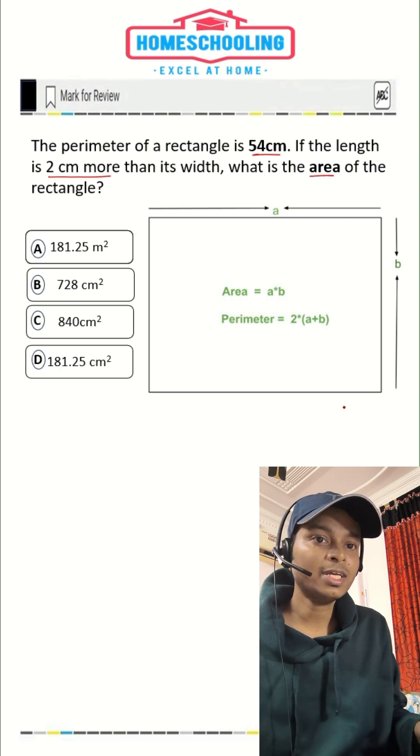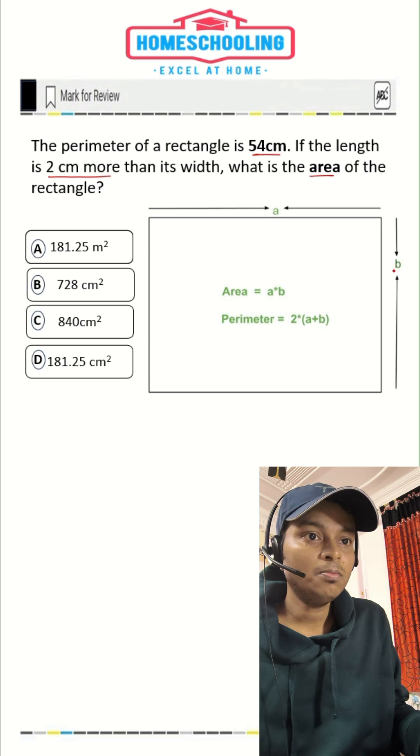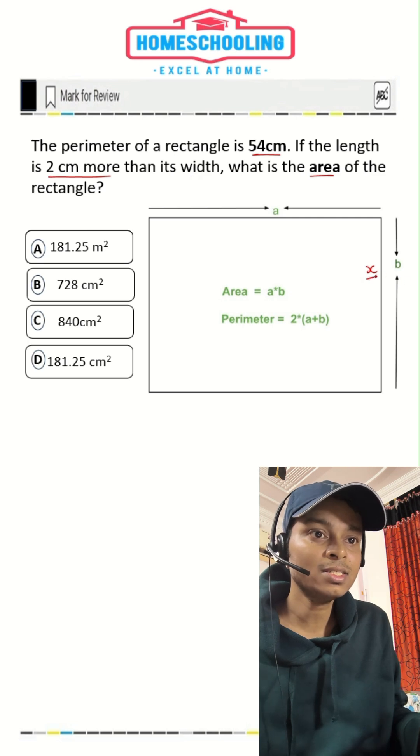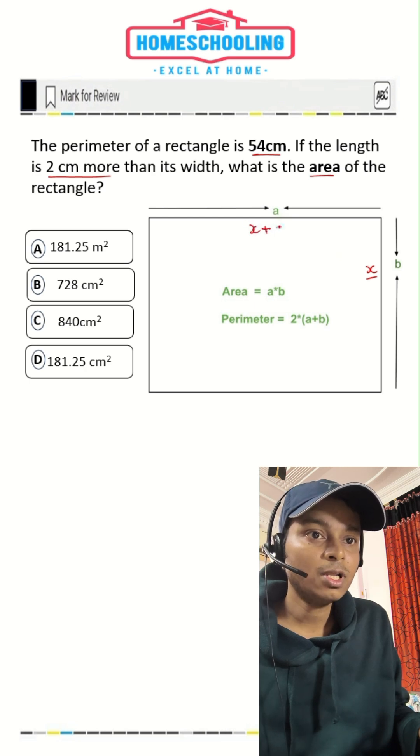So this is our rectangle here. Let's take width as B. Width B is there and the length of rectangle A is here. Let's take width B as X. And in the question, if length is two centimeters more than its width, so width is X and the length should be two centimeters more than its width. So length would be X plus two.